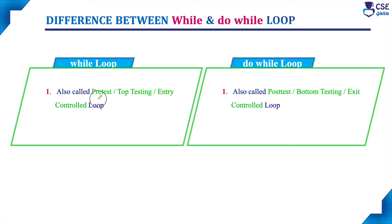While loop is otherwise called pretest loop, top testing loop, and entry control loop. In while loop, first itself it will test the condition. Only when the condition is evaluated to true then only it will allow the body of the loop to execute. Suppose if the condition fails in the first iteration itself, it will not allow the body of the loop to execute. Since the condition is tested first, it is called pretest loop, top testing loop, and entry control loop.